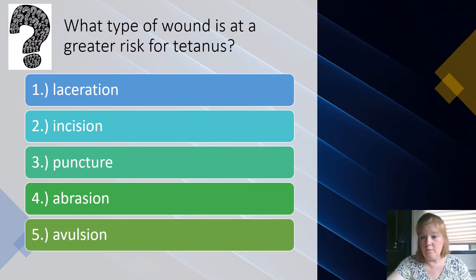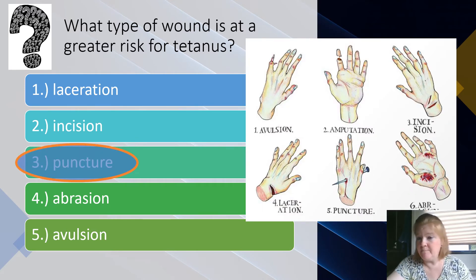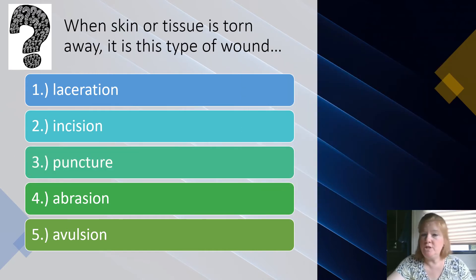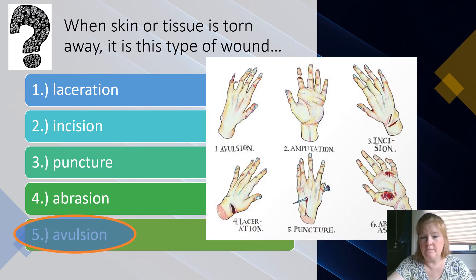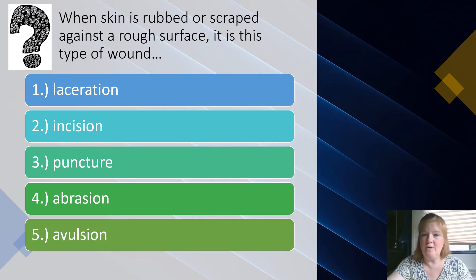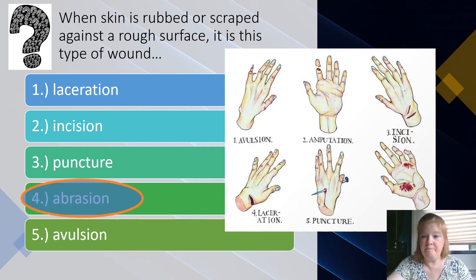What type of wound is at greater risk for tetanus? That's a puncture wound. When skin or tissue is torn away, it is this type of wound — avulsion. When skin is rubbed or scraped against a rough surface, it is this type of wound — abrasion.